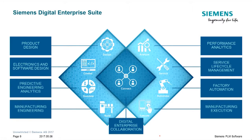How do we create smarter digital twins? Part of it is having a broad portfolio — our digital enterprise suite, covering nine different segment areas: product design with CAD solutions, electronics and software, predictive analytics, manufacturing engineering with Tecnomatix, performance analytics, service lifecycle management, factory automation, and manufacturing execution — all brought together in a collaborative environment. These are the components of what we mean by the digital enterprise suite.